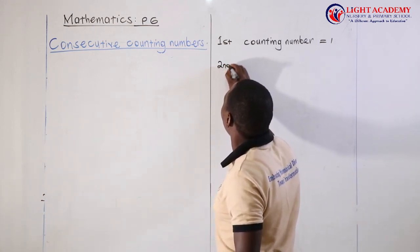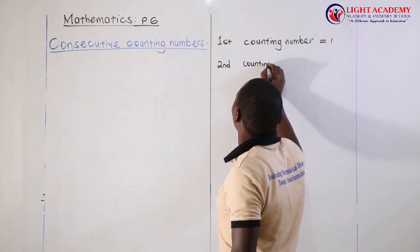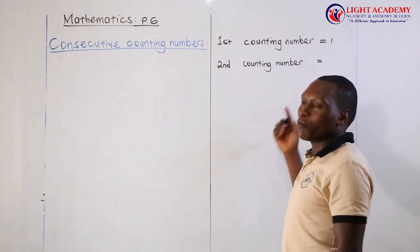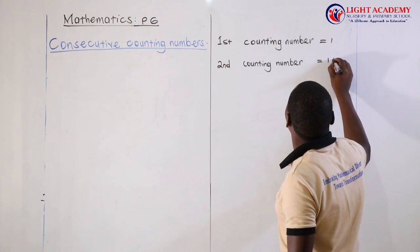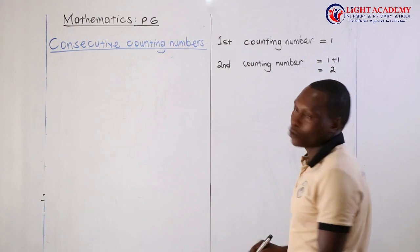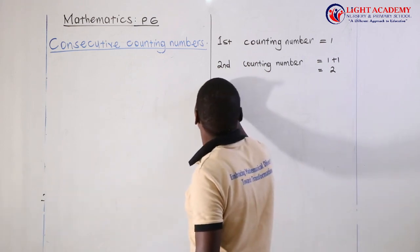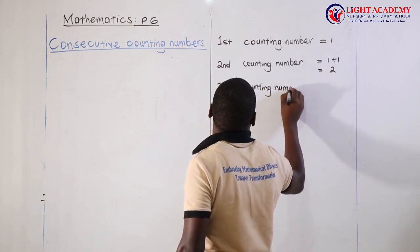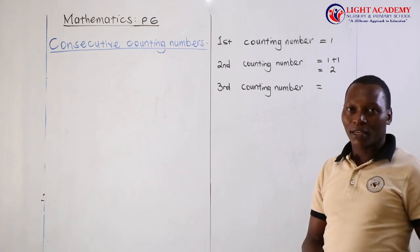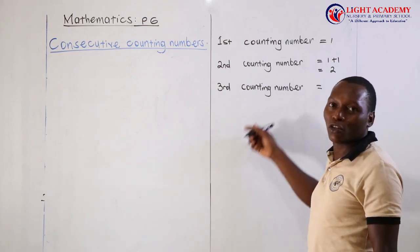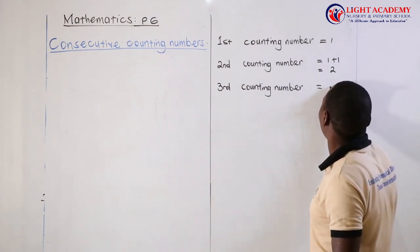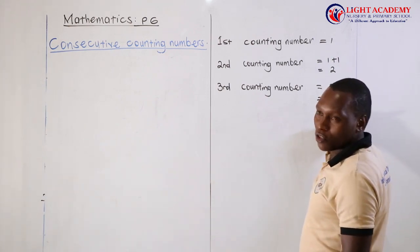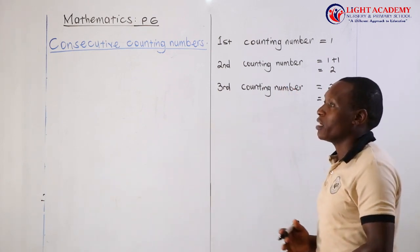The second counting number is gotten by adding 1 to the first number, so it is 1 plus 1 equals 2. The third counting number is gotten by adding 1 to the number before it, which is 2. So 2 plus 1 equals 3. Therefore the third counting number is 3. This applies to all other numbers.